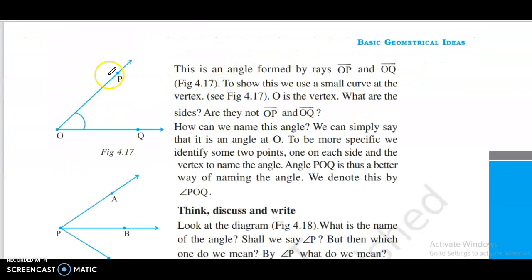This is an angle formed by rays OP and OQ. To show this, we use a small curve at the vertex. Who is the vertex? What are the sides? Are they not O and Q?